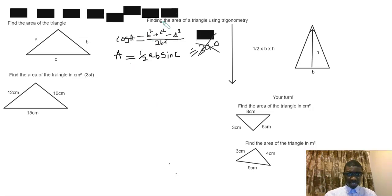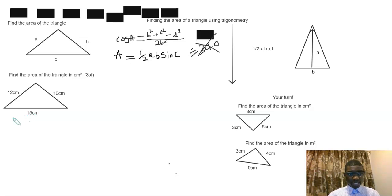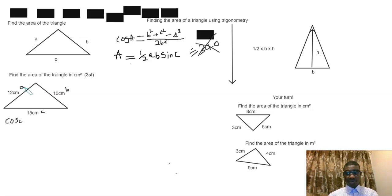Now to get the right answer, we would need to use another version of this. So let's say cos C—cos C, because let's say 15 is c, 10 is b, and 12 is a. Cos C would be equal to a²—